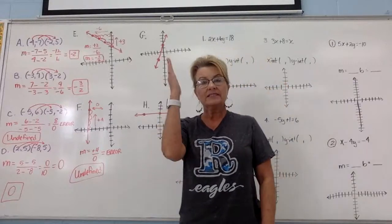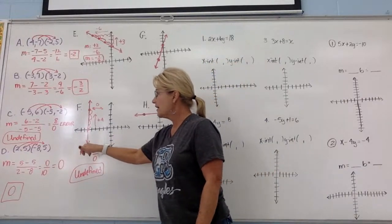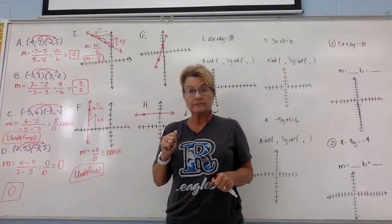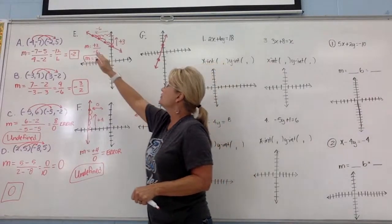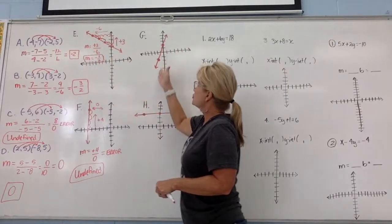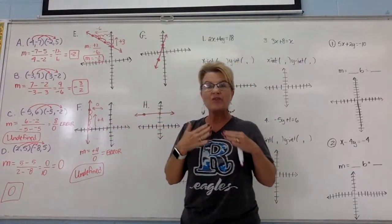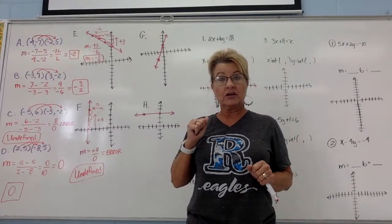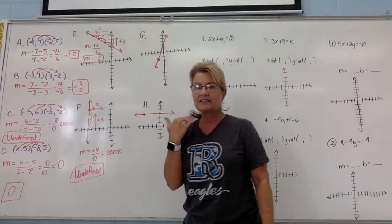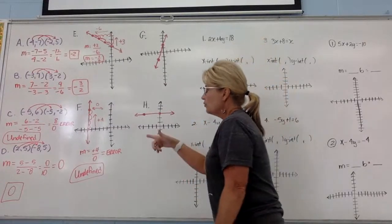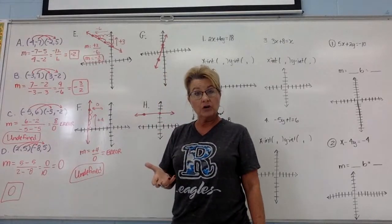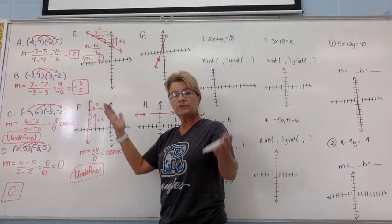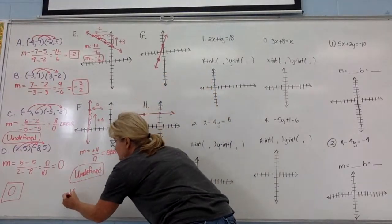An undefined slope means the line is perfectly vertical. Think of it as a ski slope — a normal slope you can ski down, but a vertical line is like a cliff. It's undefined because it doesn't really exist as a slope you can navigate. The key rule: anytime you have an undefined slope, it will always graph as a vertical line, and any vertical line will always have an undefined slope.